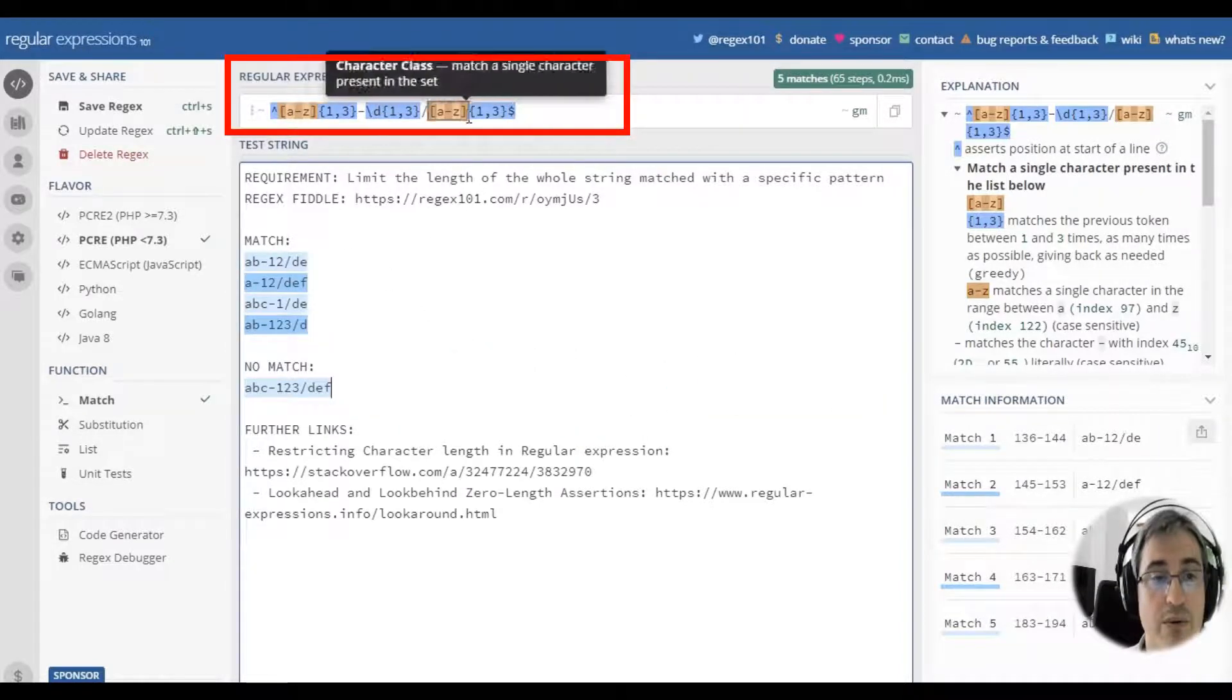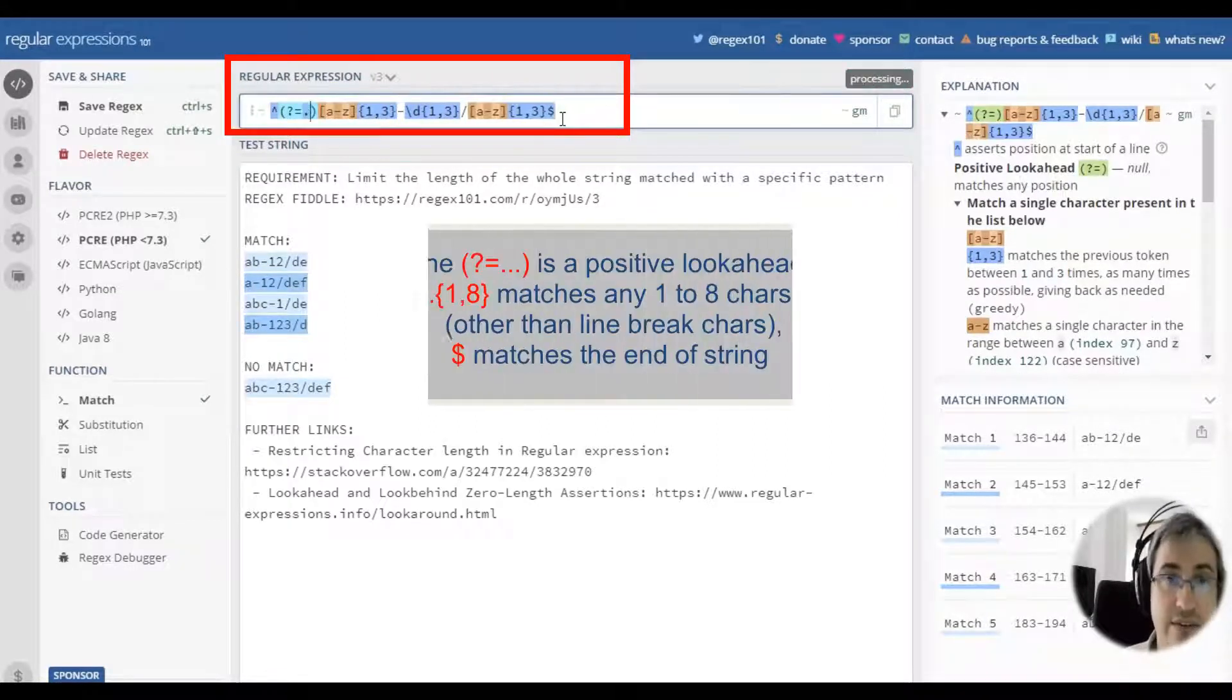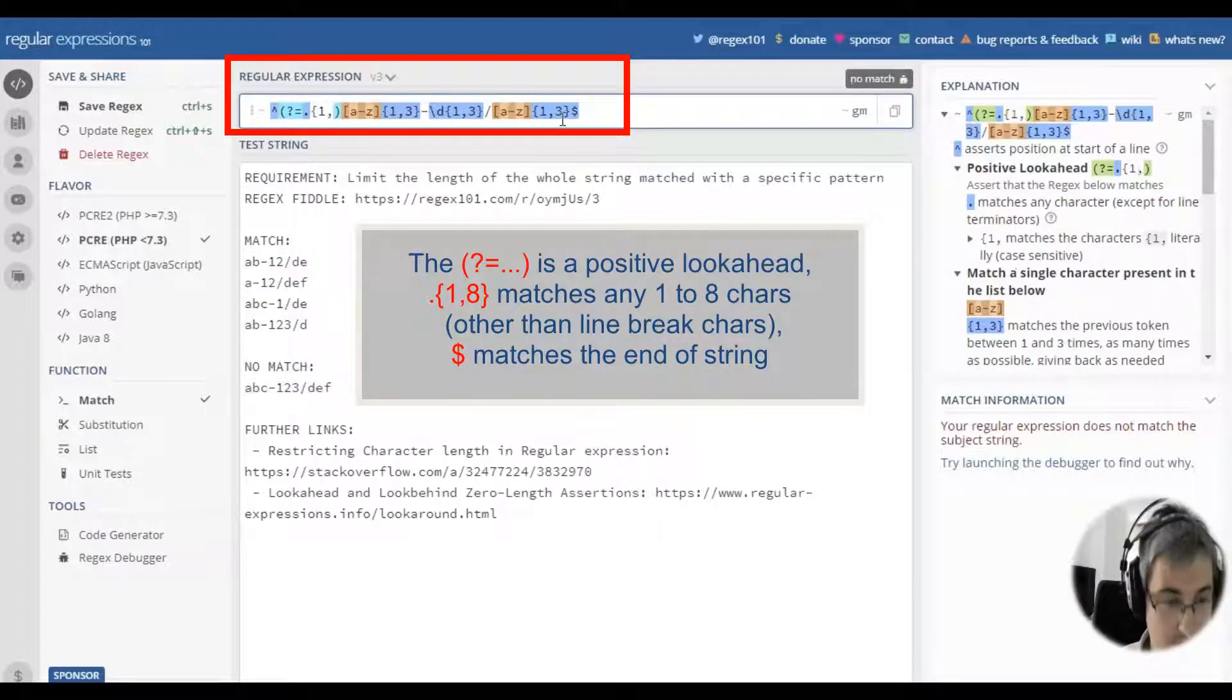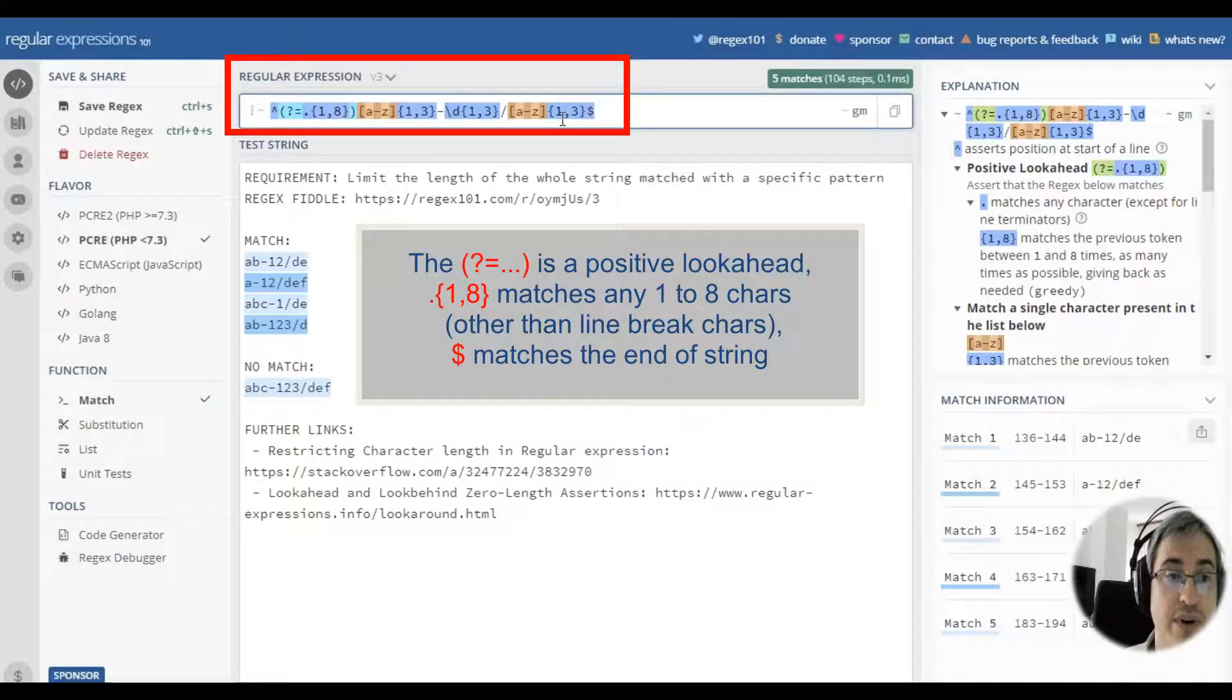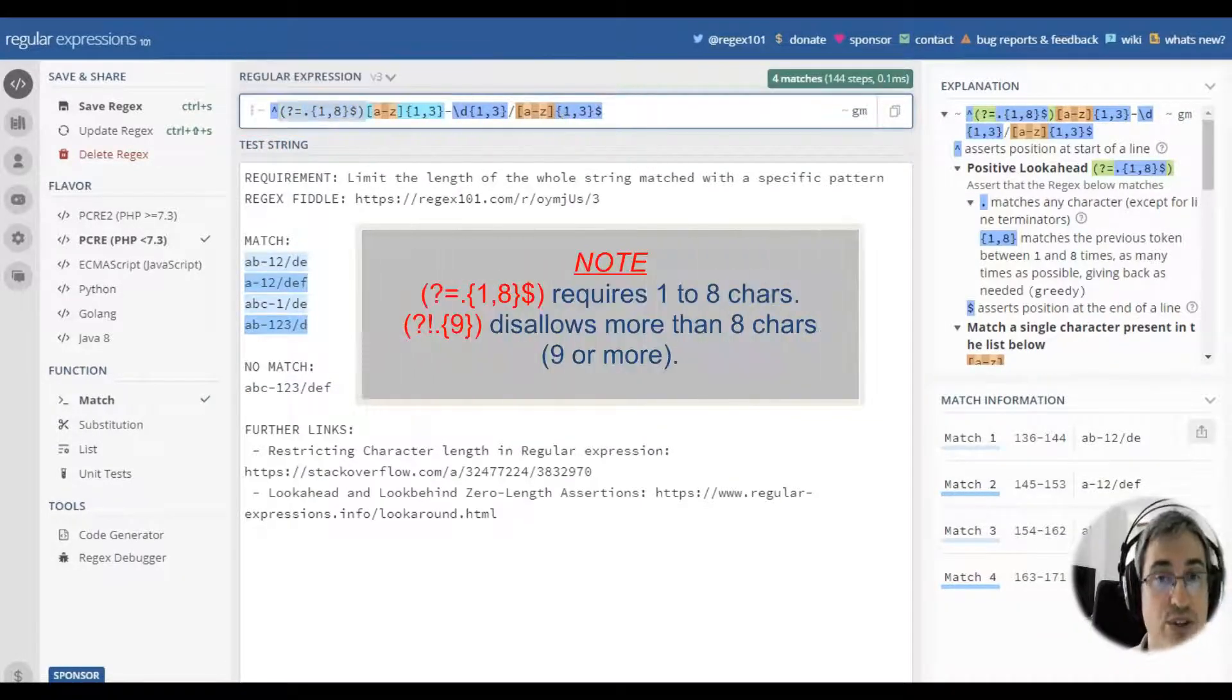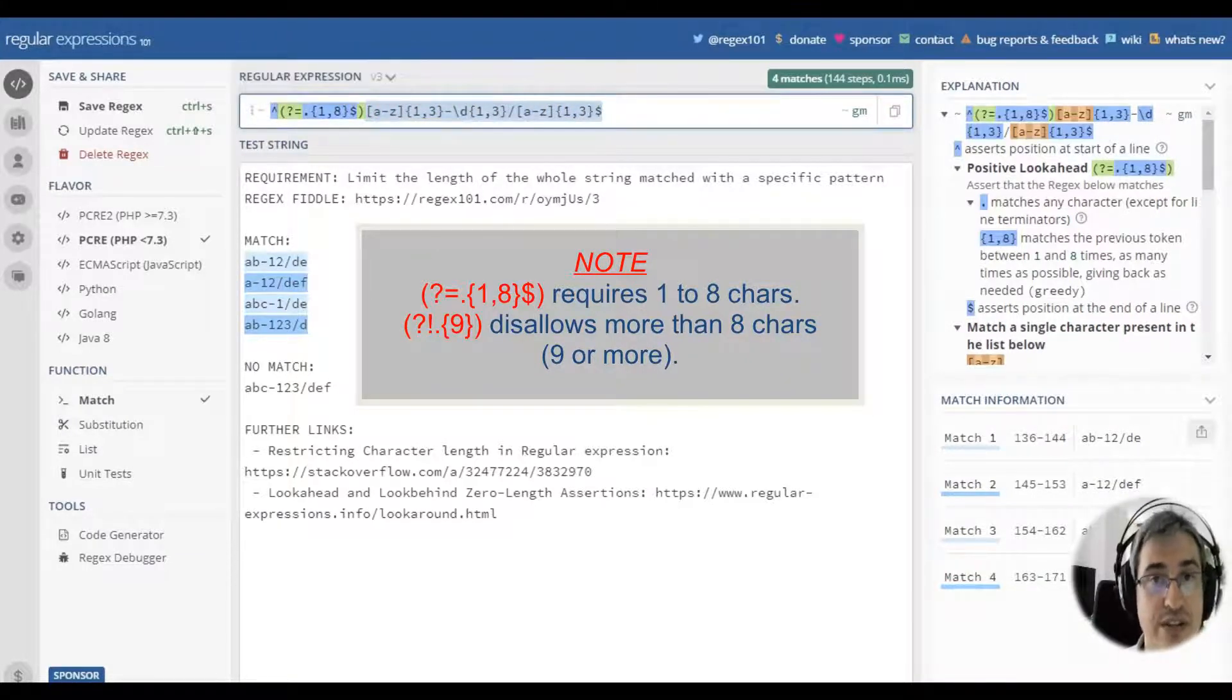To make sure this pattern only matches strings of one to eight characters, we use a positive lookahead that matches any character one, two, three, etcetera, eight times until the end of string. This lookahead makes sure that this pattern only matches strings that are no longer than eight characters.